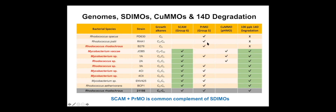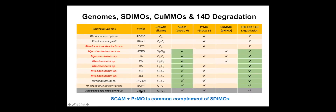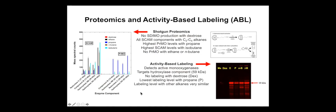Cells grown on propane or butane that have propane monooxygenase do not degrade 1,4-D at very low concentrations. SCAM and PrMO are a common complement in many bacteria. To determine which enzyme is responsible for 1,4-D degradation in the representative strain *Rhodococcus rhodochrous* ATCC 21198, we used the genome to look at exactly what proteins are expressed by the organism during growth on different hydrocarbons.